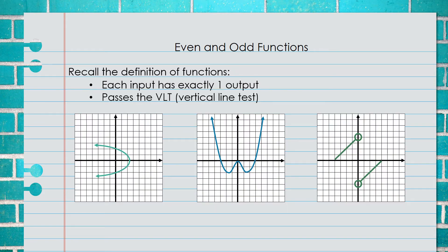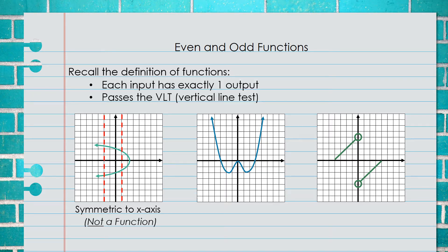Here are a few graphs that cover the different types of symmetries discussed earlier. The first graph is symmetric with respect to the x-axis. To determine if it is a function, we perform the vertical line test by placing vertical lines across the graph. Since the vertical lines cross the graph more than once, this is not a function.